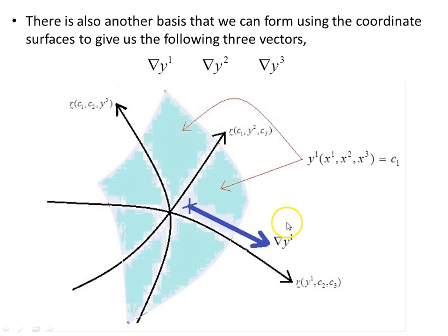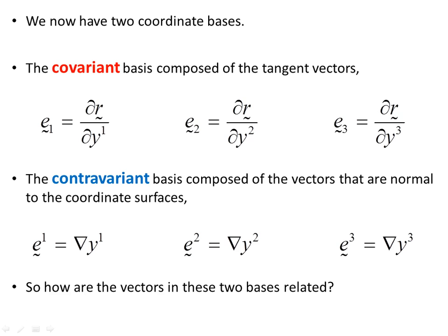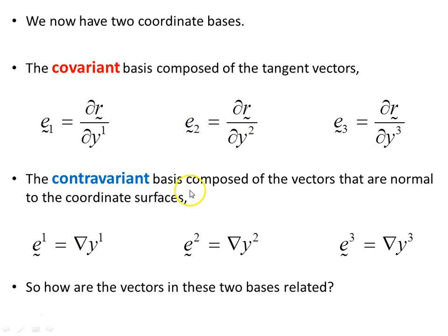They're found by taking the del operator of each coordinate. We now have two coordinate bases: the covariant basis composed of the tangent vectors — they are tangent to the coordinate curves, labeled with subscripts 1, 2, 3 — and the contravariant basis composed of vectors that are normal to the coordinate surfaces, labeled with upper indices.